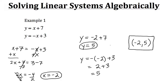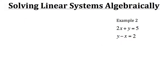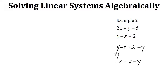Let's look at another example using the substitution method. In example 2, our system is 2x plus y equals 5, and y minus x equals 2. Here we don't have a variable already isolated, so we need to do that ourselves. Let's isolate x using the second equation: y minus x equals 2. Moving y to the other side by subtracting y leaves us with negative x equals 2 minus y. To completely isolate x, we multiply both sides by negative 1 to change the sign.